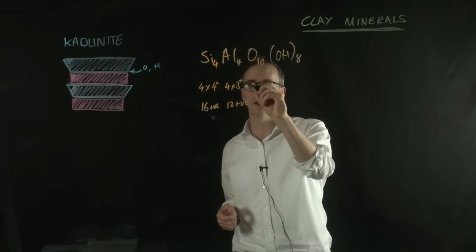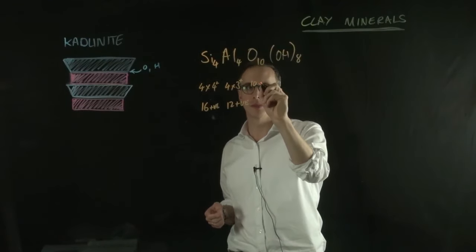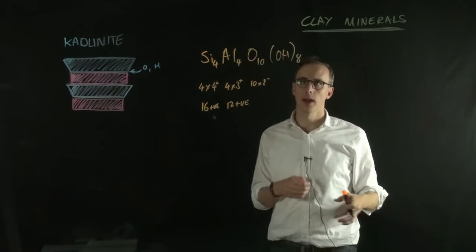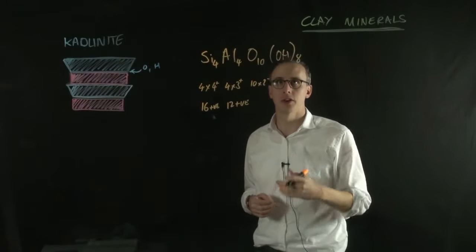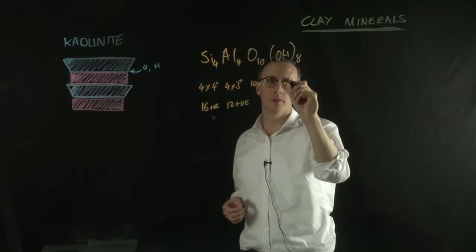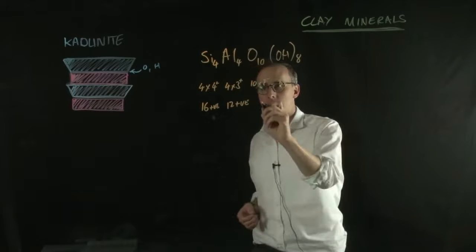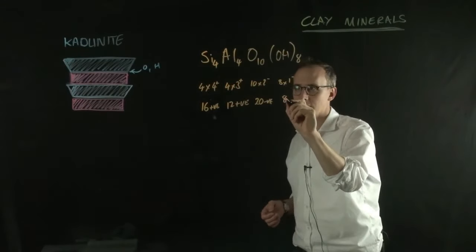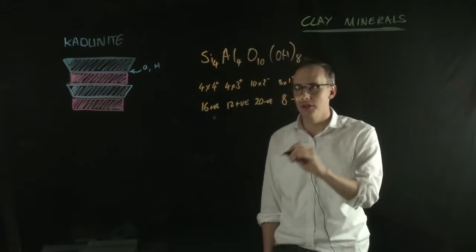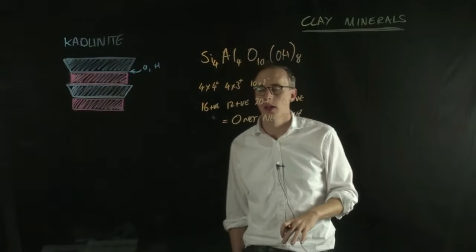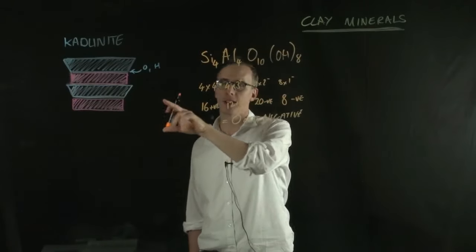Oxygen has a two-negative charge. So, we have ten times two-negative. And the OH group has one negative charge. So, we have eight times one negative. We have here 20 negative charges and eight negative charges. If we add up all of those together, we actually get a zero net charge. And this would be the case for kaolinite.